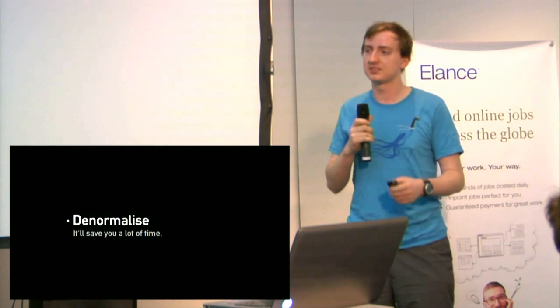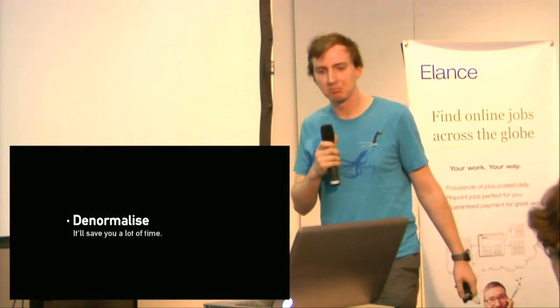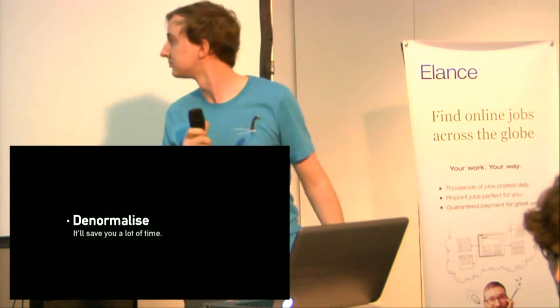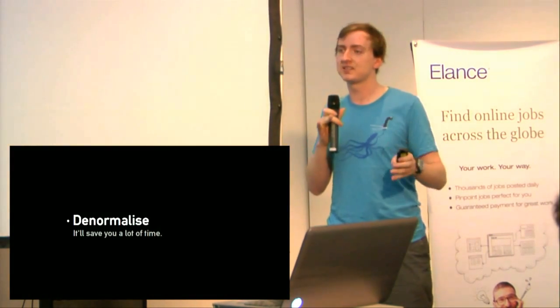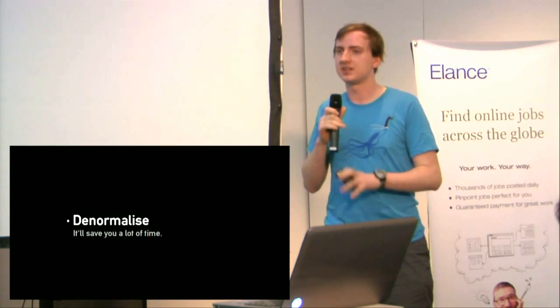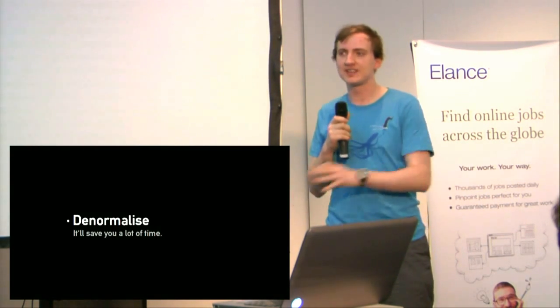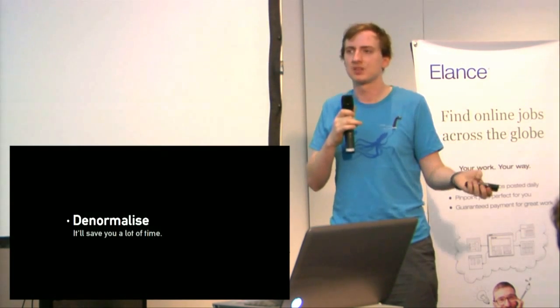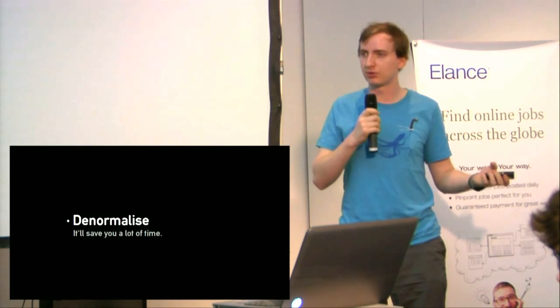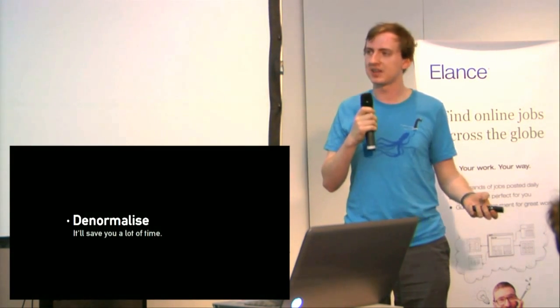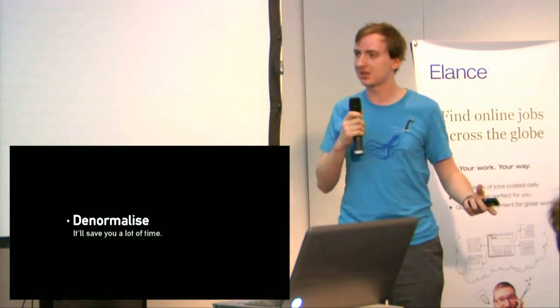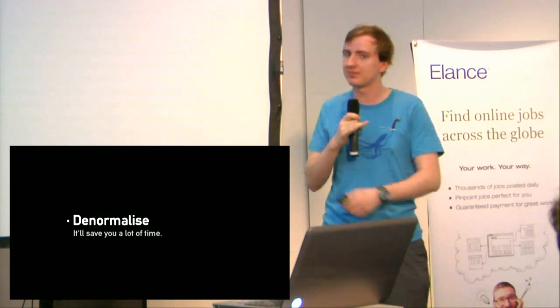The solution to this is to denormalize — for those unfamiliar, this means moving data not only to the table where it originally lives. For example, in a forum, every post shows the person's username and description. Rather than querying all usernames via ID every time you view that list of posts, you can denormalize that data into the post table — you've only got one query, it's already in the same table, an easy lookup with no massive join.